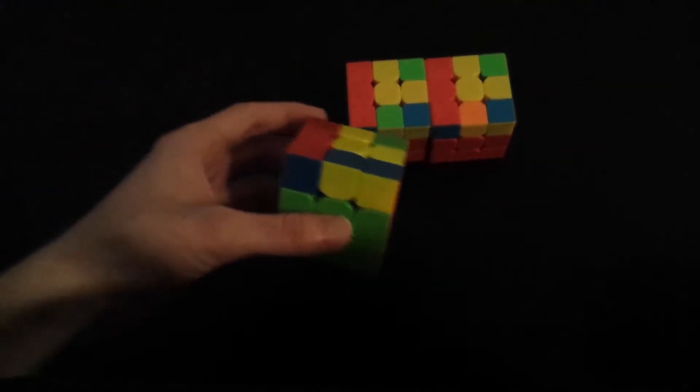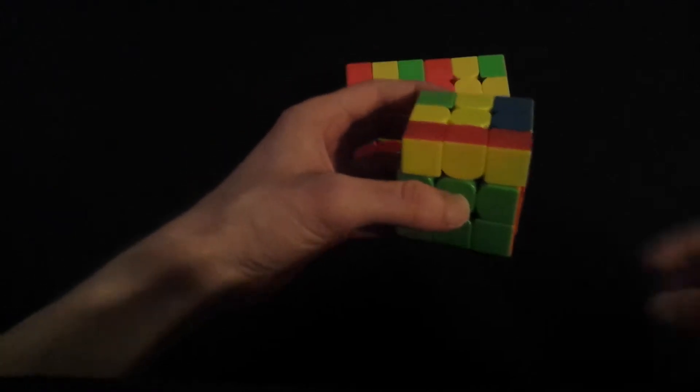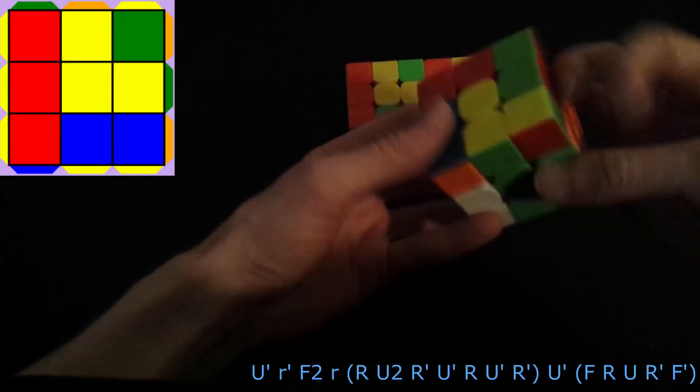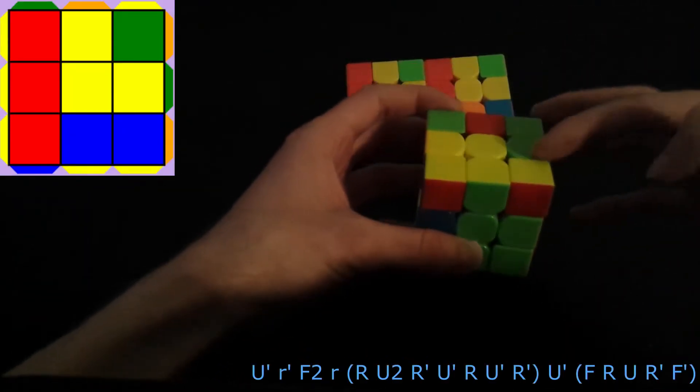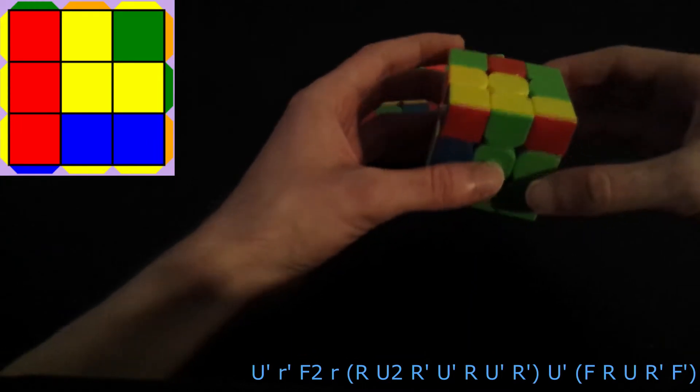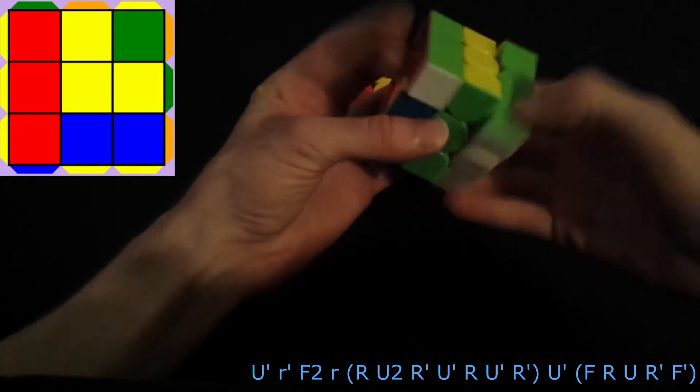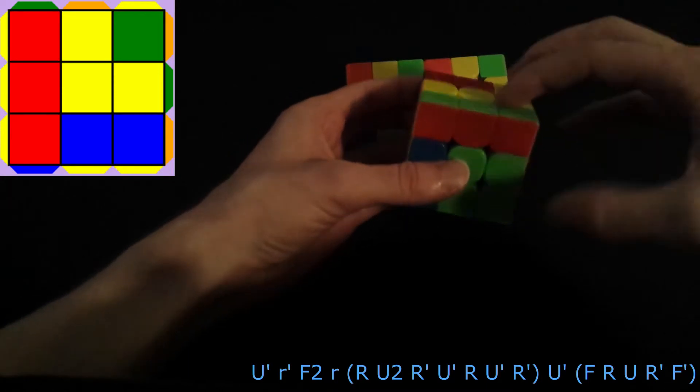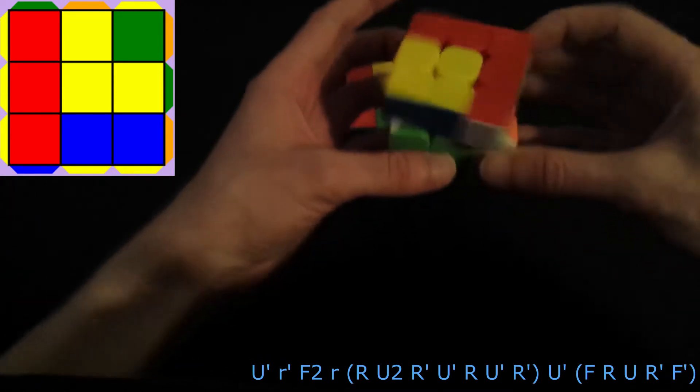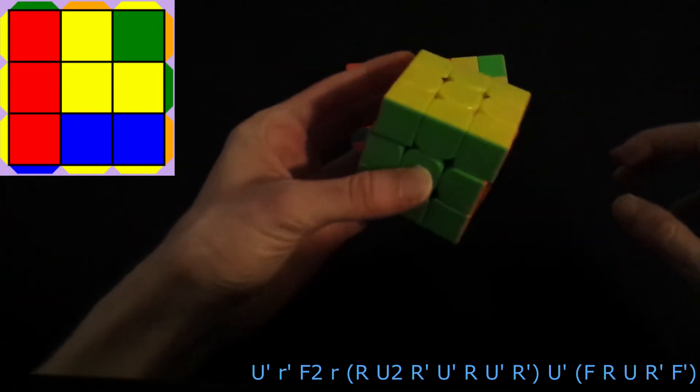For this case here, you're going to do it from this angle. You do wide R' F2 wide R, which takes out this pair on the left. Then you do an anti-sune U' and insert this pair using VLS. That's just an easy five move insert, and you've got it solved.